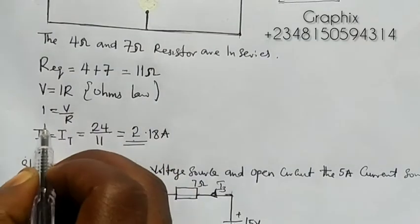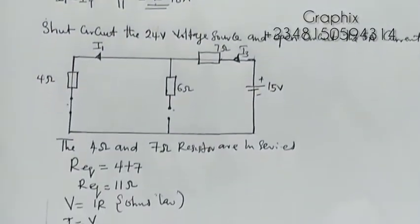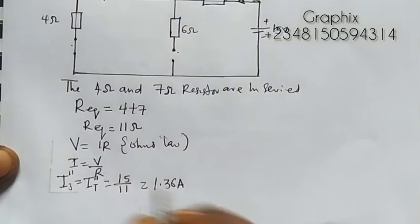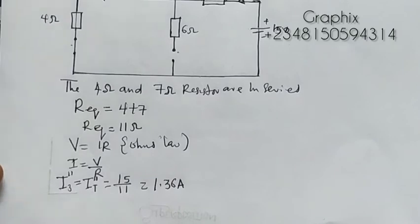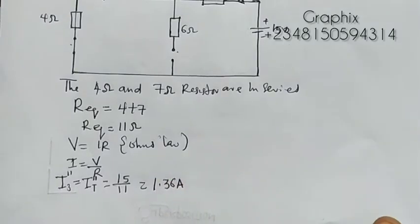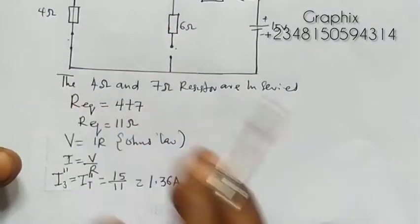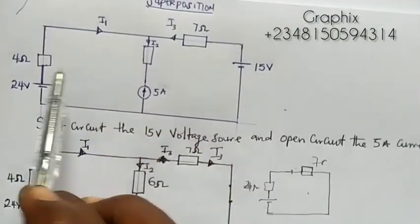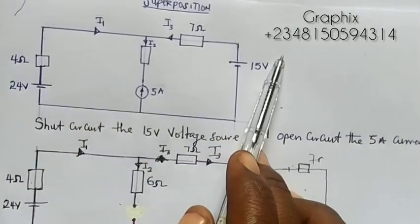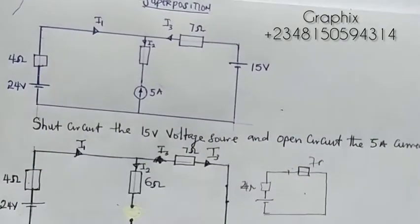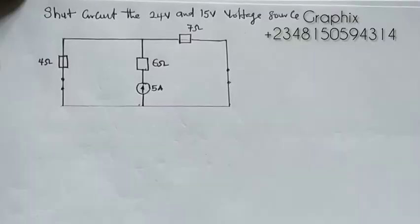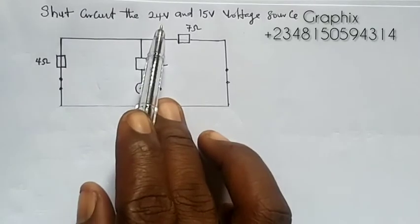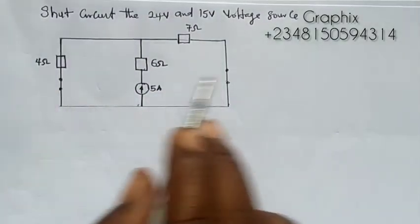The result from the first case will be labeled as prime, and the result from the second case will be labeled as prime-prime. The next step is to short circuit both the 24-volt and 15-volt sources and leave only the 5-ampere current source operating.